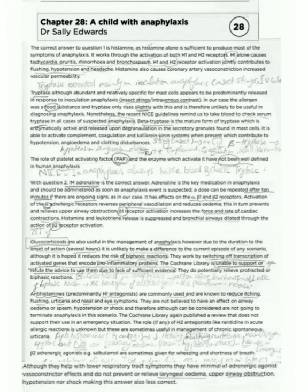The correct answer to question 1 is histamine, as histamine alone is sufficient to produce most of the symptoms of anaphylaxis. It works through the activation of both H1 and H2 receptors. H1 alone causes tachycardia, pruritus, rhinorrhea, and bronchospasm. H1 and H2 receptor activation jointly contributes to flushing, hypotension, and headache. Histamine also causes coronary artery vasoconstriction and increased vascular permeability.